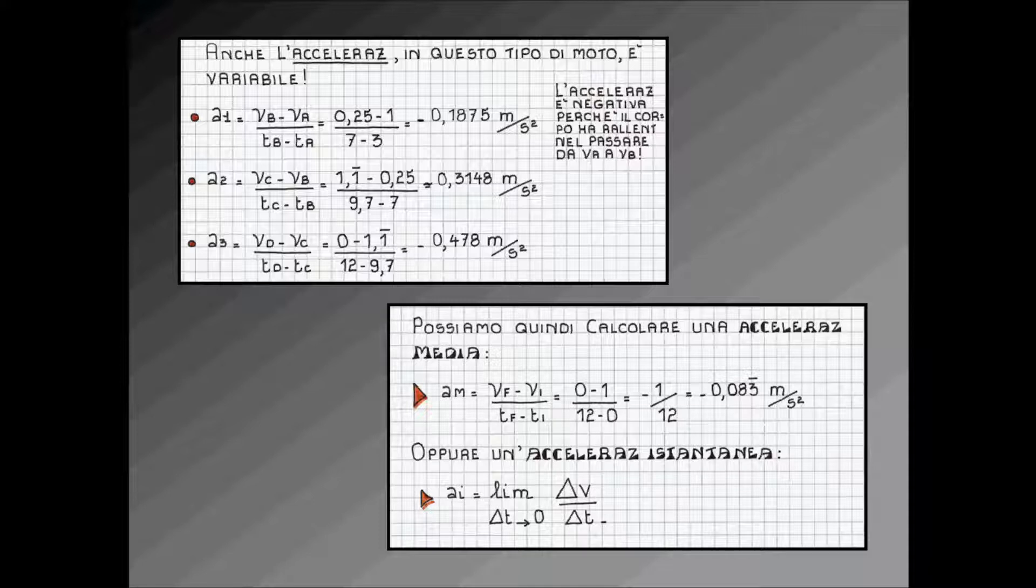Come detto anche per la velocità, per l'accelerazione possiamo ricorrere ad un'accelerazione media. L'accelerazione media, indicata con il simbolo M, è definita come il rapporto fra VF-VI e TF-TI. Come si vede, otteniamo un'accelerazione più bassa di quella che abbiamo calcolato nei due casi in cui abbiamo ottenuto un'accelerazione negativa, ma sempre negativa, perché per la maggior parte del tempo il corpo ha subito una decelerazione, un rallentamento.